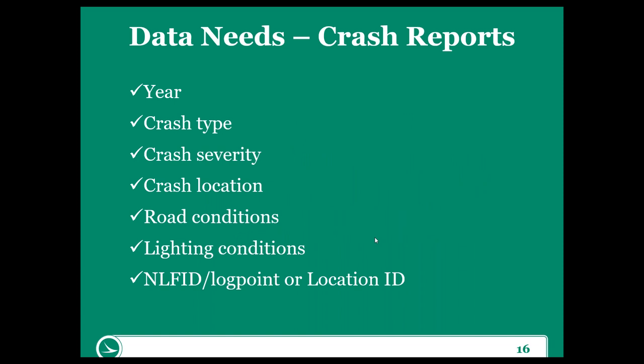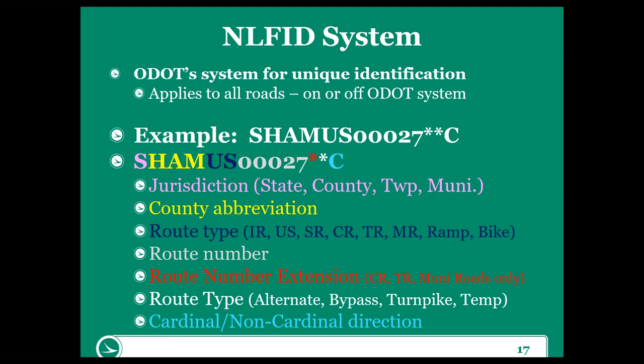The next type of data after existing conditions that we're really going to start looking through is crash data. Crash reports collected by officers are our basis for crash data. At a minimum, we want to collect year, crash types, crash severities, crash locations, road conditions, lighting conditions, and an NLF ID and log point or location ID. The NLF ID is ODOT's system for unique identification for a roadway — it applies to all roads, either on or off the ODOT system, so local roads all have an NLF ID as well. This will carry through to crash reports and other pertinent information, and all records in TIMSS have NLF IDs associated with the segments.